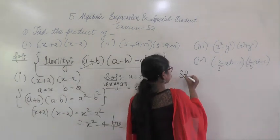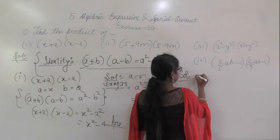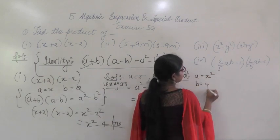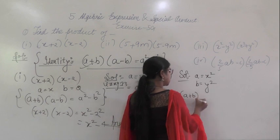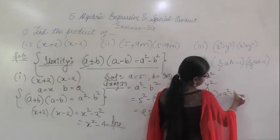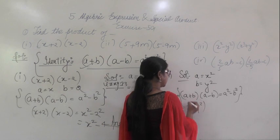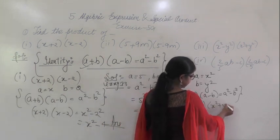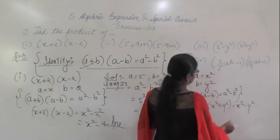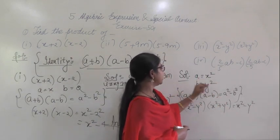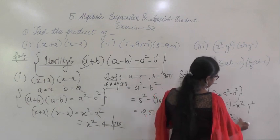The next question is X squared minus Y squared multiplied by X squared plus Y squared. Here A equals X squared and B equals Y squared. Using identity 3, A plus B into A minus B equals A squared minus B squared. Substituting, the answer is X to the power of 4 minus Y to the power of 4.